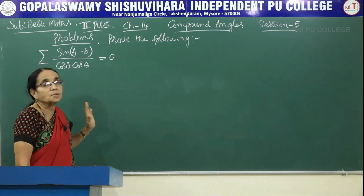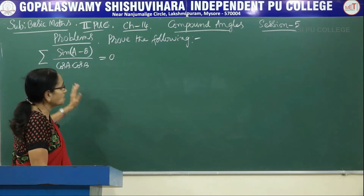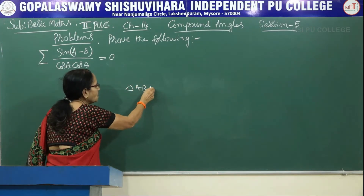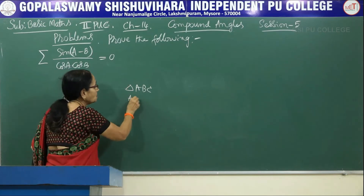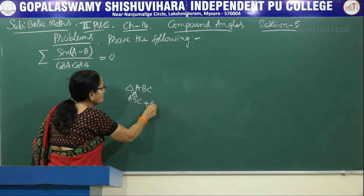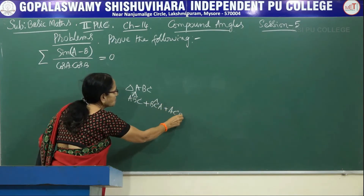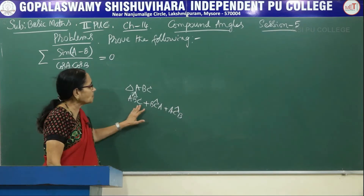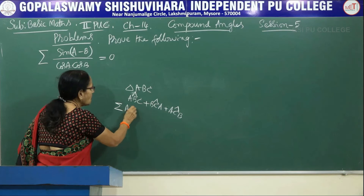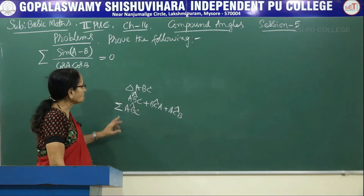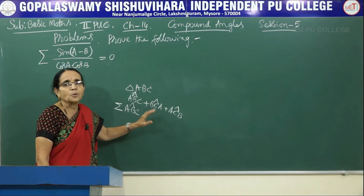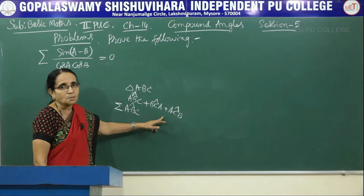Now look at this symbol — it is called sigma, a Greek alphabet. Sigma stands for summation. Suppose I am considering a triangle ABC. I am taking the sum of the angles: angle ABC plus angle BCA plus angle ACB. Instead of writing all three angles, I can write the first term and use the sigma symbol.